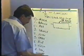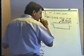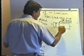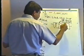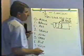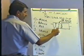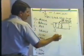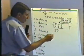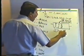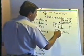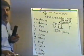Let's say we have one that's red, violet, green. Red is 2, violet is 7, green means five zeros: one, two, three, four, five — 2,700,000 ohms. So it is actually very simple once you've done it a few times.